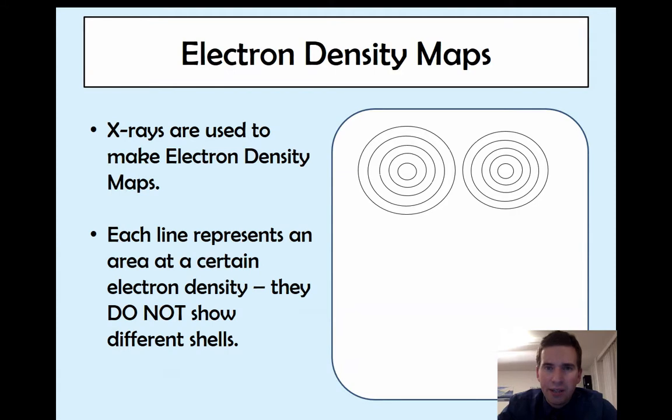Now each line represents an area of a certain electron density. They do not show shells. Don't get mixed up with your IGCSE representations of electronic configuration. Each one of these lines is like the contour lines on a map. So in a geological map a contour line will show all of the area at a certain height. The lines here show a certain electron density.